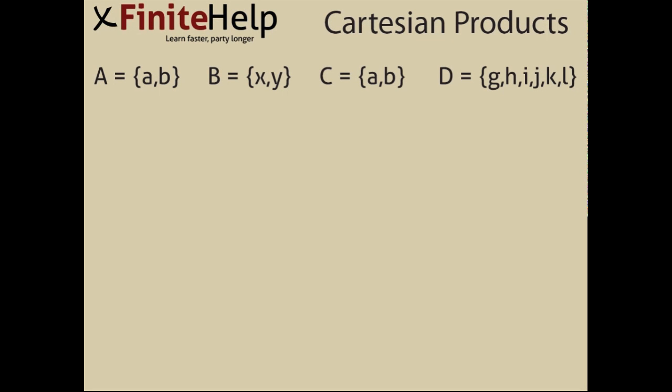Cartesian products are one of the easiest things you're going to learn in finite math. It's the cross product of two sets in ordered pairs.